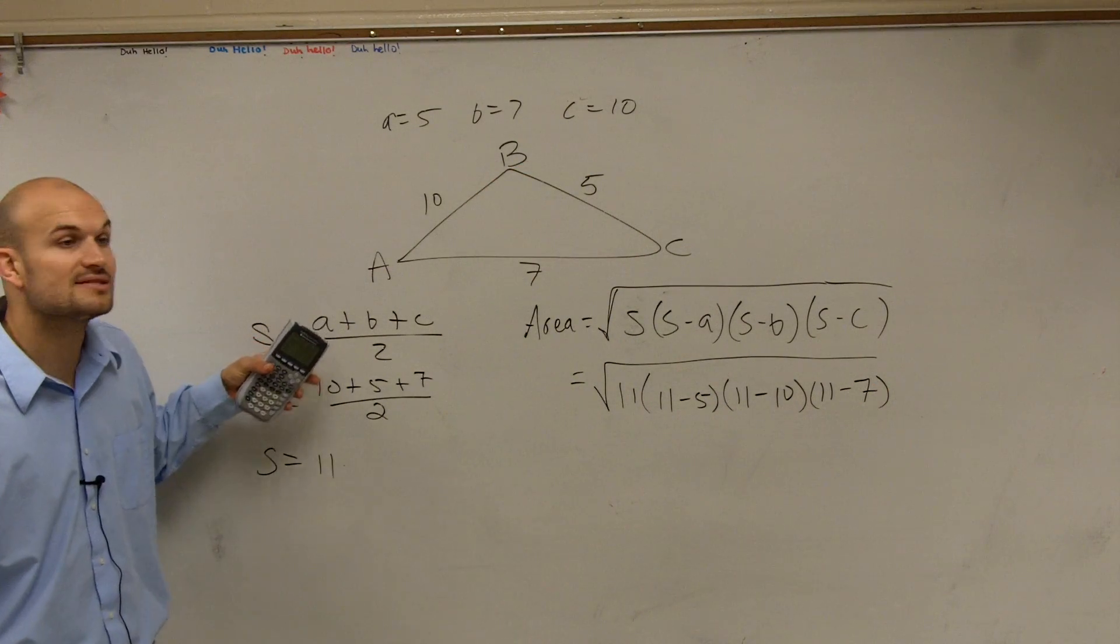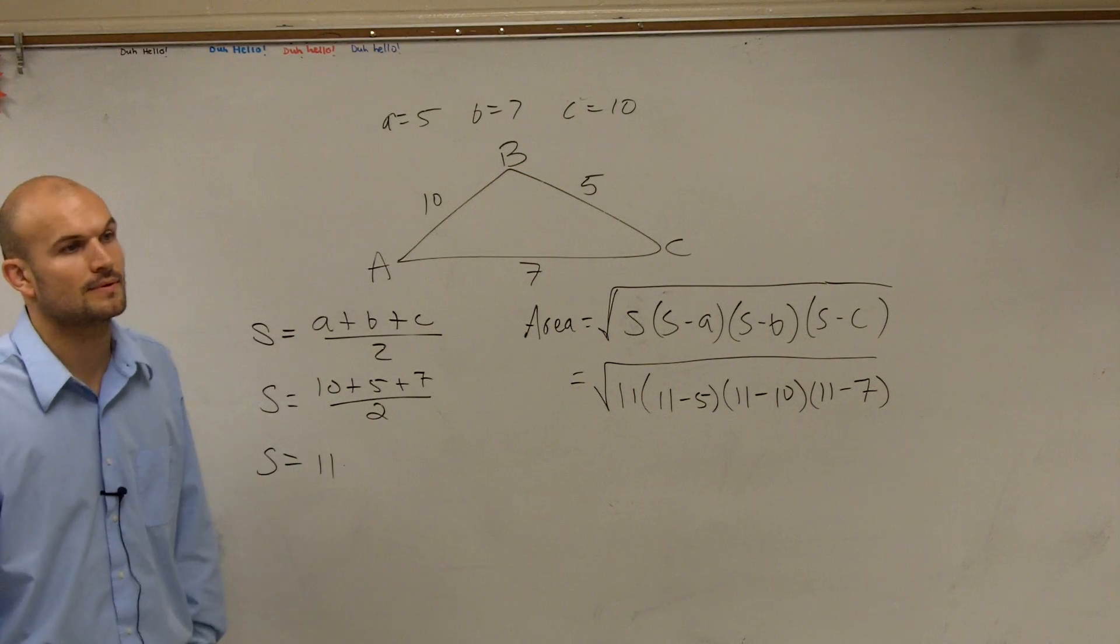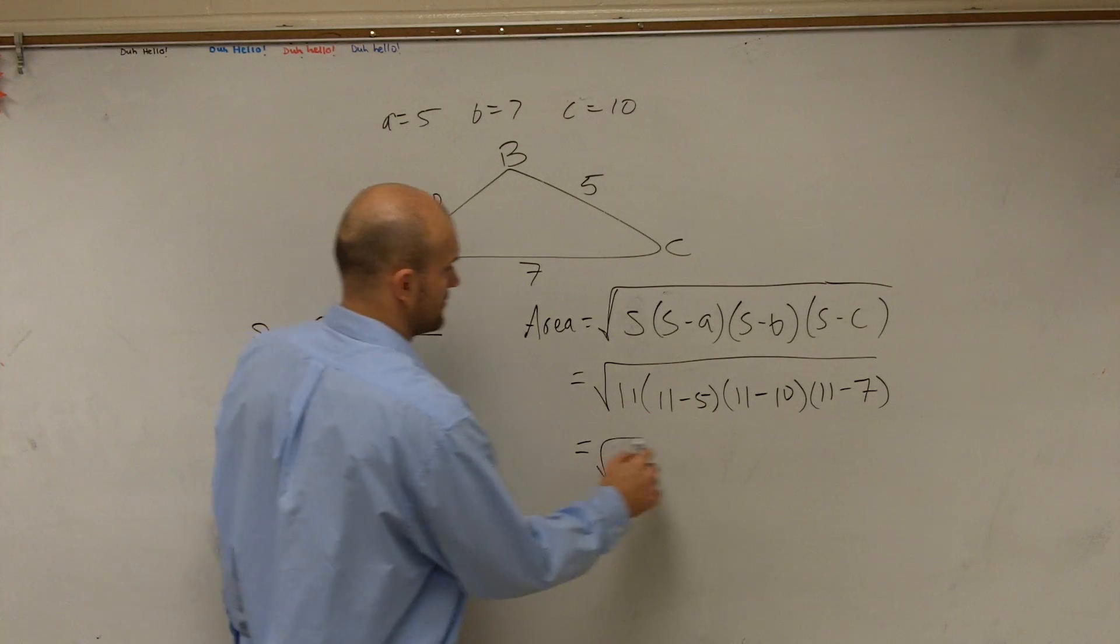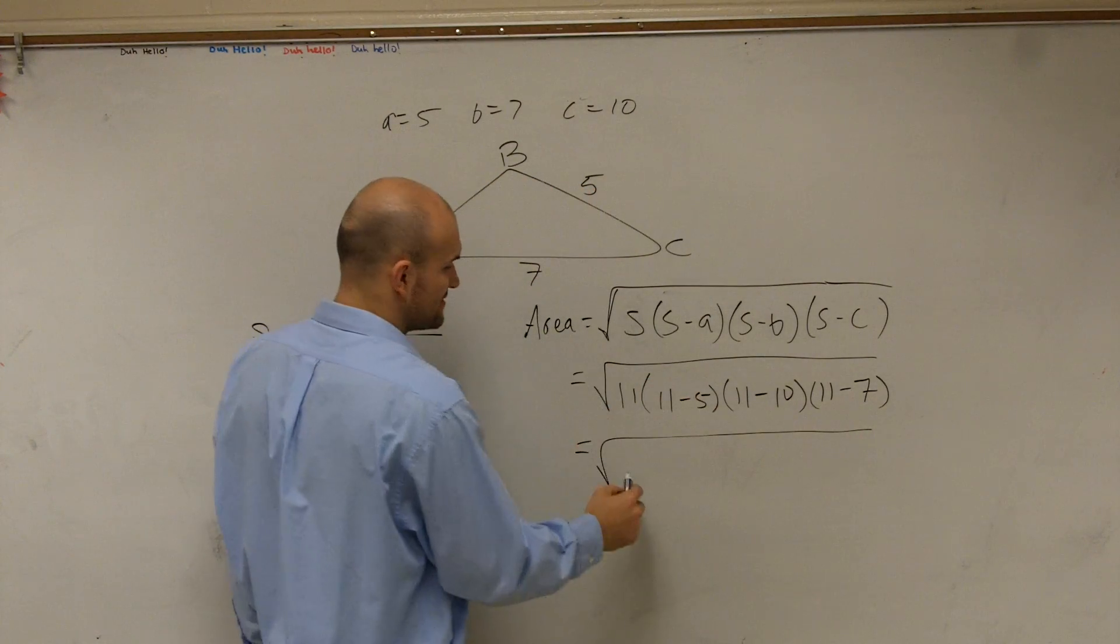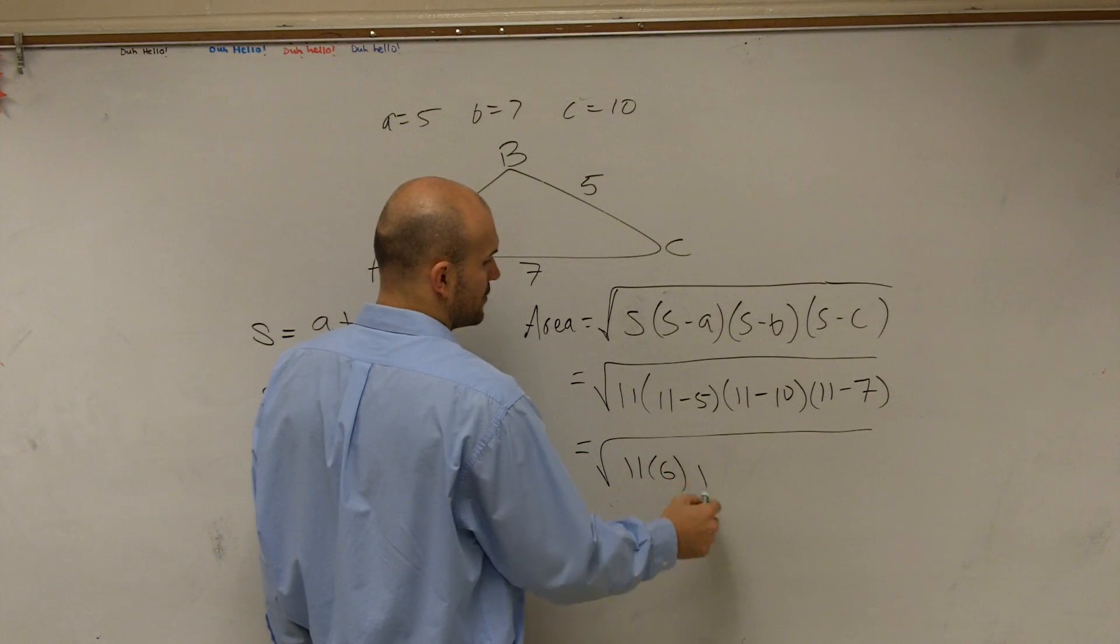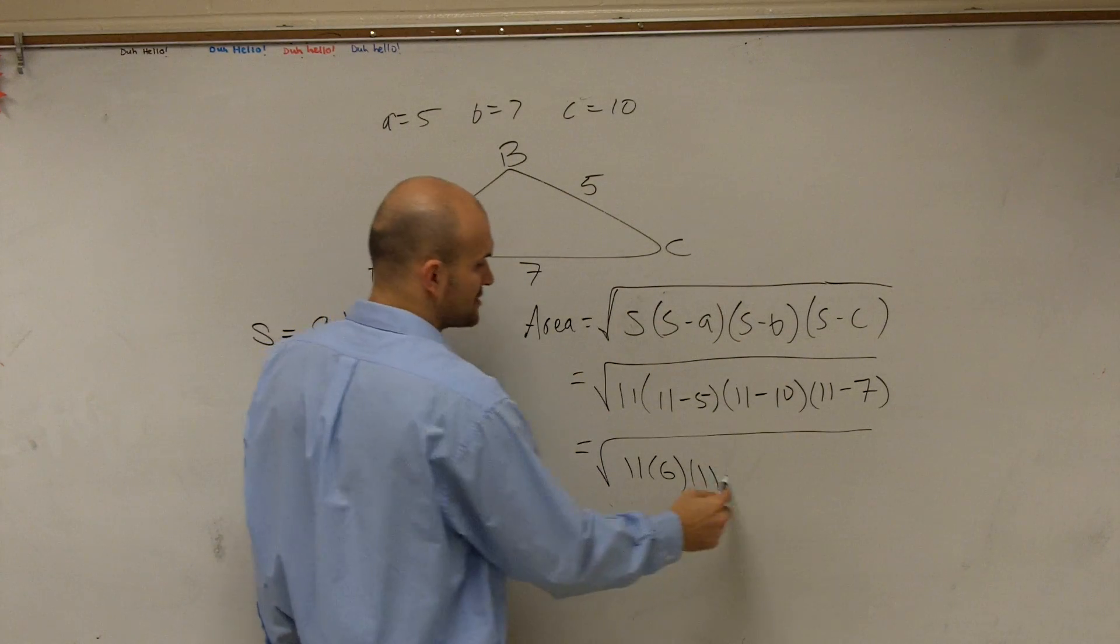OK, so now let's just go and simplify. 11 minus 5 is 6. 11 minus 10 is 1. 11 minus 7 is going to be 4.